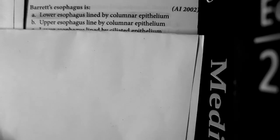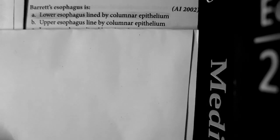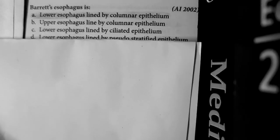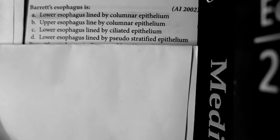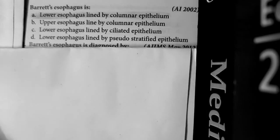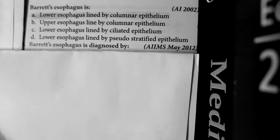Option B, upper esophagus lined by columnar epithelium, is false, because the upper esophagus is normal and lined by squamous epithelium. The lower esophagus is lined by columnar epithelium, not ciliated. So the true statement is that the lower esophagus is lined by columnar epithelium.